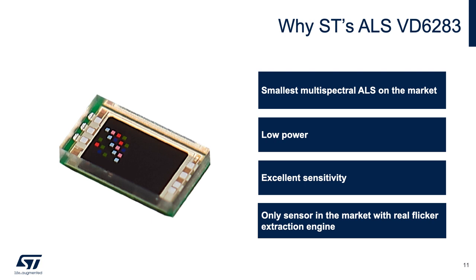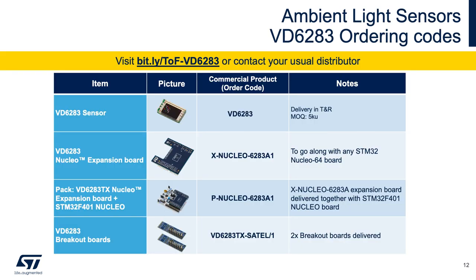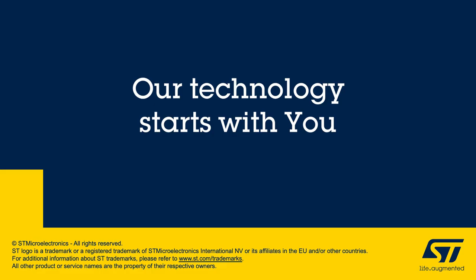In conclusion, the benefits of ST's ambient light sensors are being the smallest multispectral ALS on the market with low power and excellent sensitivity, and being the only sensor in the market with a real flicker extraction engine. For more information, ordering codes for our ambient light sensor evaluation kit, or the data sheet, please refer to ST.com or get in touch with your distributor or sales contact — and remember, our technology always starts with you.